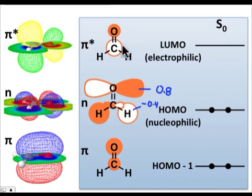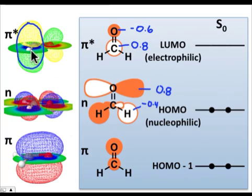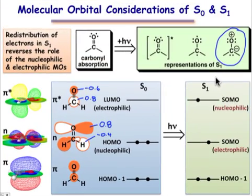Promoting it to π star, here the LCAO approximation and its coefficients have a reversal. Now the largest coefficient is about 0.8 on carbon and minus 0.6 on oxygen. And so now the electron in the π star is largely located on that carbon atom.